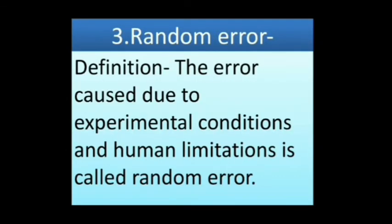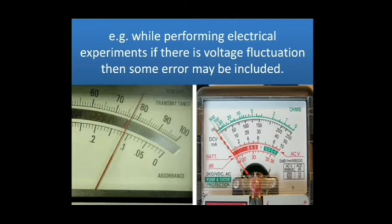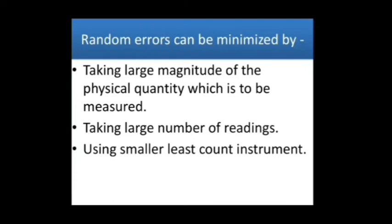Random errors: The error caused due to experimental conditions and human limitations is called a Random Error. For example, while performing electrical experiments, if there is voltage fluctuation, some error may be included. While performing the Stokes experiment to determine the coefficient of viscosity of a liquid, when the metal sphere crosses marking A, the stopwatch should be started, and as soon as it crosses marking B, the stopwatch should be stopped.